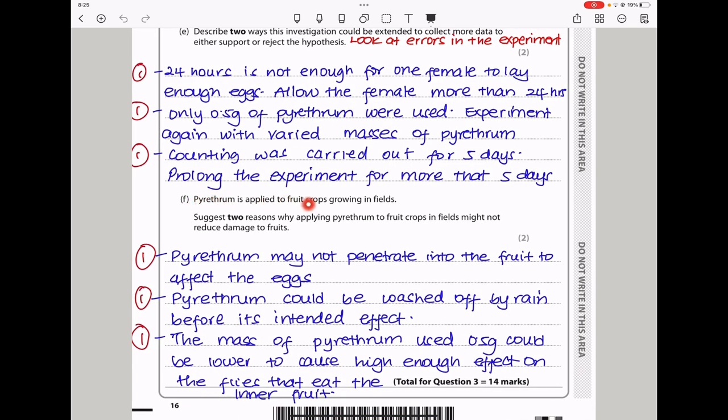In part F, pyrethrum is applied to fruit crops growing in fields. State two reasons why applying pyrethrum to fruit crops in fields might not reduce the damage to fruits. It's because pyrethrum is applied on the surface, yet the fruit flies are going to be on the inside, or the pupae are going to be on the inside, so it may not reach them. Also, the concentration or mass used is quite small, it may not be strong enough to destroy them from the outside. And then the pyrethrum could be washed away. So I say pyrethrum may not penetrate into the fruits to affect the eggs, and pyrethrum could be washed off by rain before its intended effect. Also, the mass of pyrethrum used, which is 0.5 grams, could be too low to cause high enough effect on the fruit flies. This brings us to the end of question three.